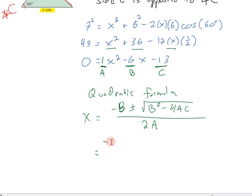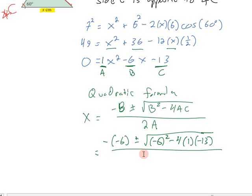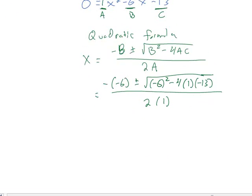Negative b is negative negative 6 plus or minus the square root of b squared minus 4ac all over 2a. Now all we have to do is simplify this expression.